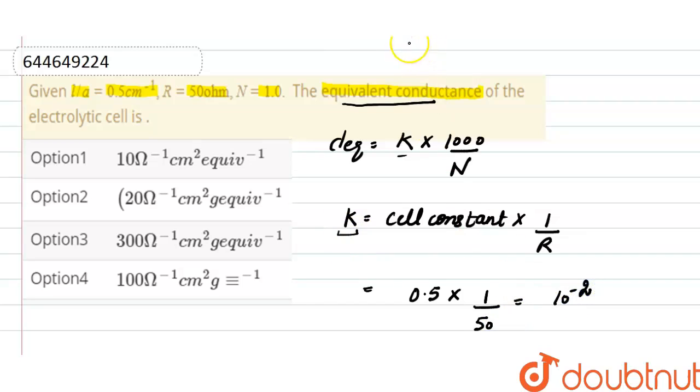Putting the value in lambda equivalent formula, this will be 10 raised to the power minus 2 into 1000 divided by normality is 1.